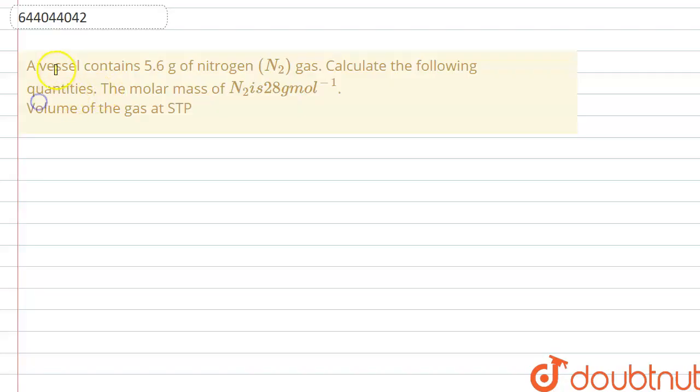Hello everyone, the question is: a vessel contains 5.6 grams of nitrogen gas. Calculate the following quantities. The molar mass of nitrogen gas is 26 grams per mole. Volume of gas at STP.